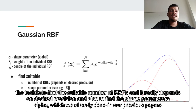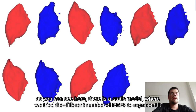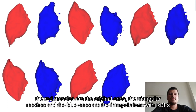The task is to find a suitable number of RBFs, which depends on the desired precision, and also to find the shape parameters alpha — which we have already done in our previous papers — and the goal of this task is to find the center points, so where we should place these individual RBFs. As you can see here, there is a static model where we tried different numbers of RBFs to represent it. The red muscles are the original triangular meshes and the blue ones are the interpolation with RBFs.